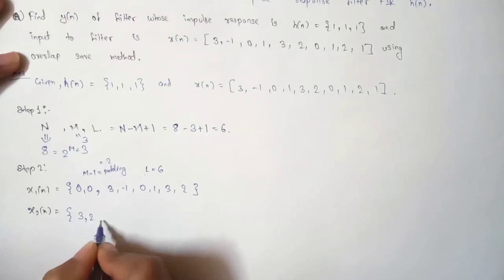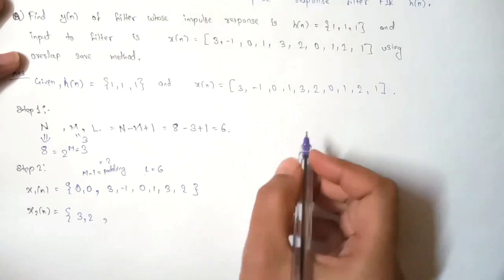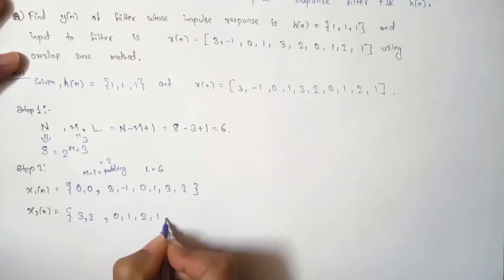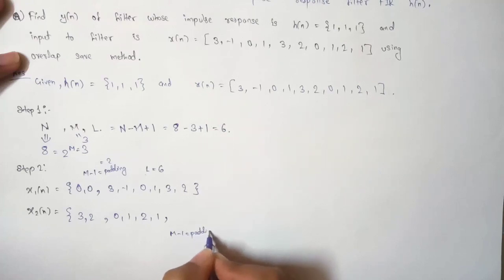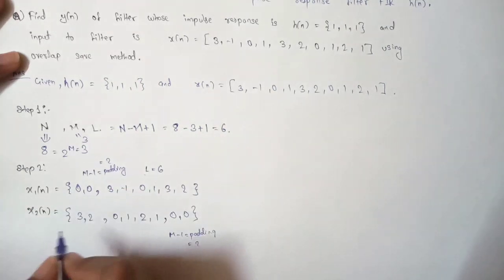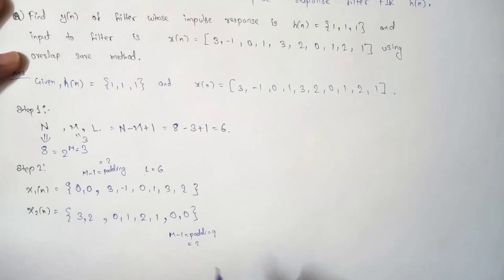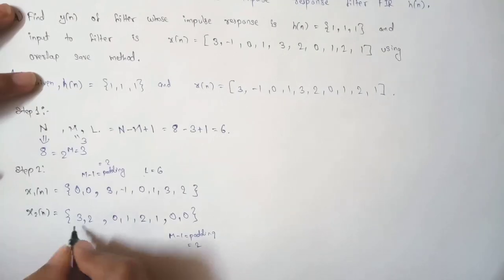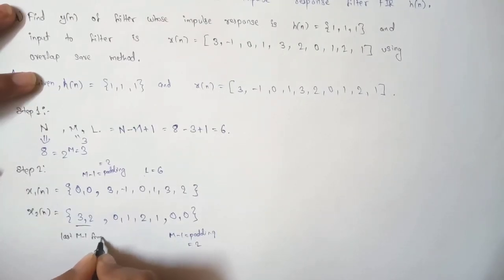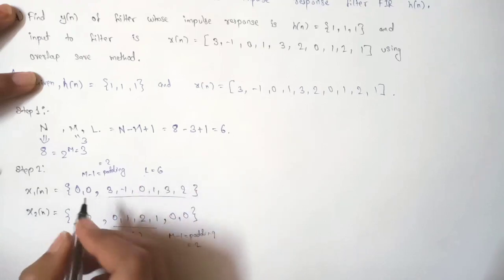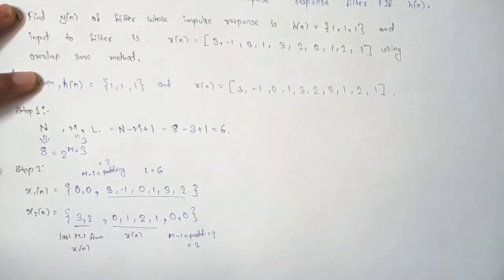To form the next signal x2(n), we take the last 2 digits from x1(n), that is {3, 2}, and then we take the remaining digits from the message signal. Since we already took 6 digits, 4 remain: {0, 1, 2, 1}. Then we add M−1 = 2 zero-padding at the end. That is how we form these two signals, which will each be convolved with h(n) to find y(n).